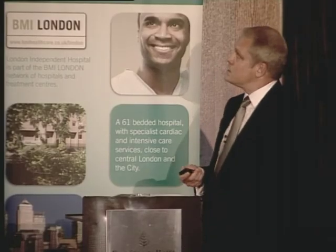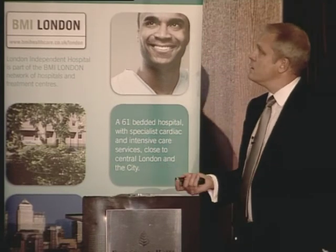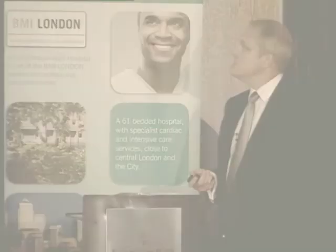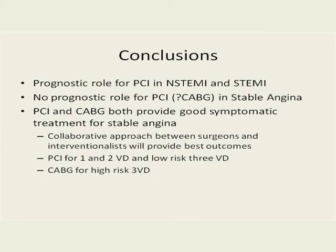To conclude: the important distinction between acute coronary syndromes and stable angina. Acute coronary syndromes have a bad prognosis, and there is evidence for a prognostic role for revascularization in both ACS and STEMI. In stable angina, there is no real hard evidence of a prognostic effect of revascularization, and the two options — PCI or bypass surgery — are best determined by a collaborative approach: generally PCI for one- or two-vessel disease and some low-risk three-vessel disease, and bypass surgery for three-vessel disease.